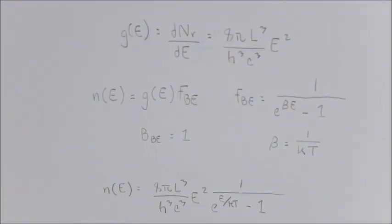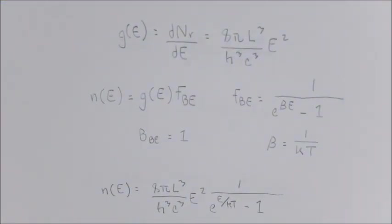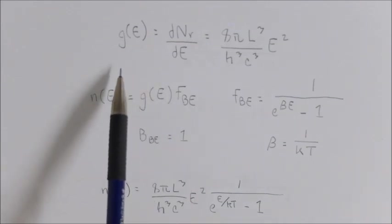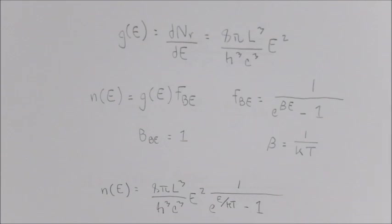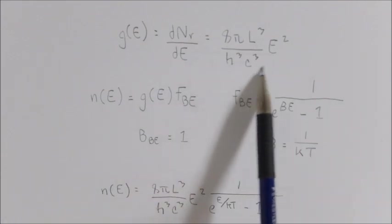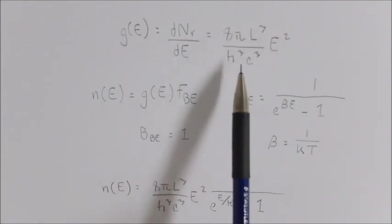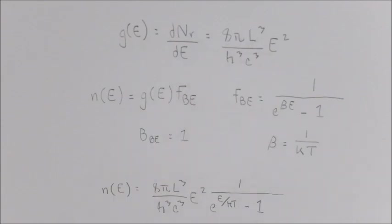From this equation, the density of states for our Bose-Einstein distribution can be calculated by taking the derivative of the equation with respect to energy. This yields this equation on the right here, which can now be substituted into our Bose-Einstein distribution.